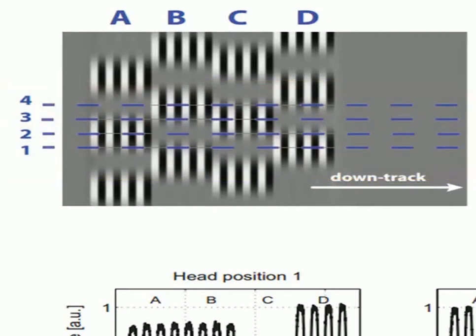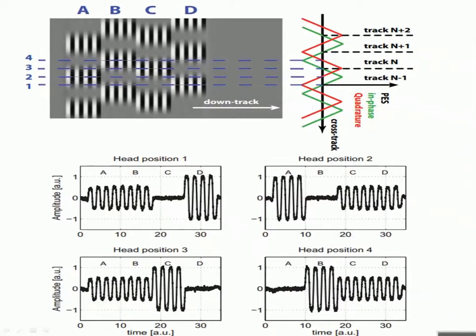Notice that when the head is on track, positions 1 and 3, the bursts A and B start exactly at the center of the track and span radially opposing each other. In position 1, track N-1, C is off track and the middle of D coincides with the track. Whereas in position 3, track N, D is off track and the middle of C coincides with the track. This arrangement is fundamental in how the head position around the track is found. For that, we need to understand the signal that is picked up by the read/write head.